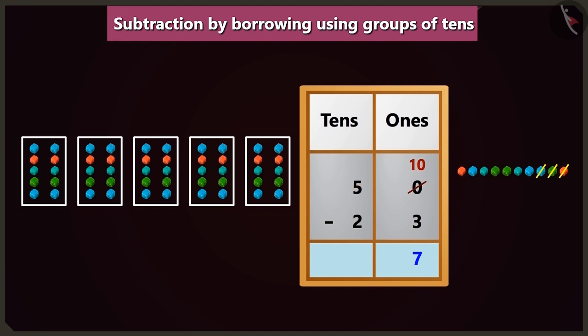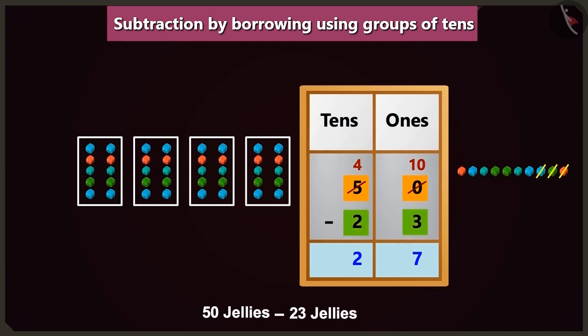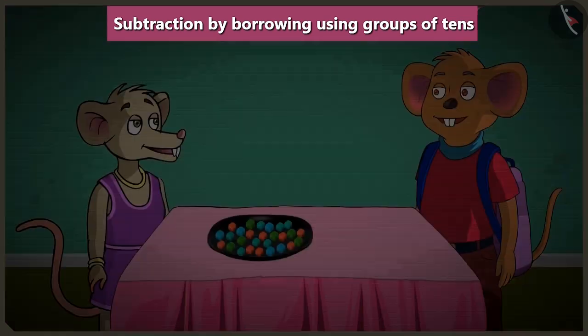Oh, yes. You are right, Choo-Choo. So here if we will subtract one ten from five tens in the box of tens, then it will be four tens. If we will subtract two tens from four tens, then we will be left with two tens. Yes. So this way, if we will subtract twenty-three jellies from fifty jellies, then you will be left with only twenty-seven jellies.